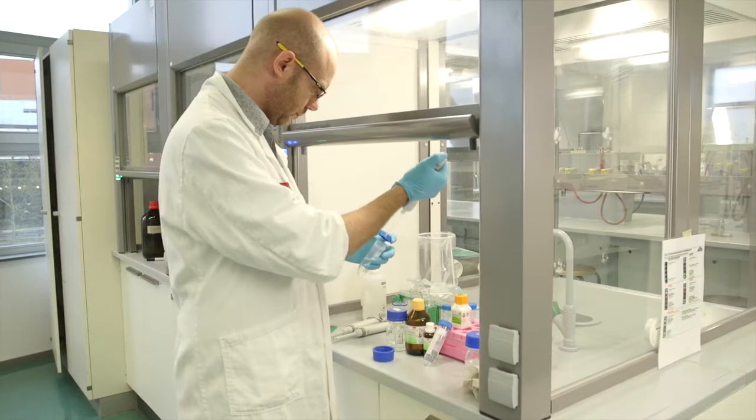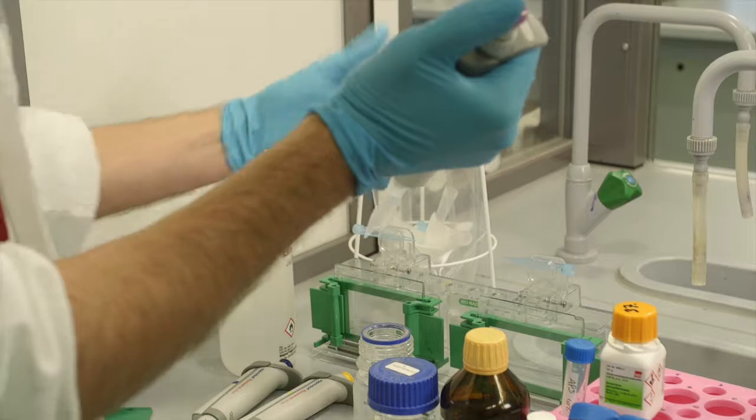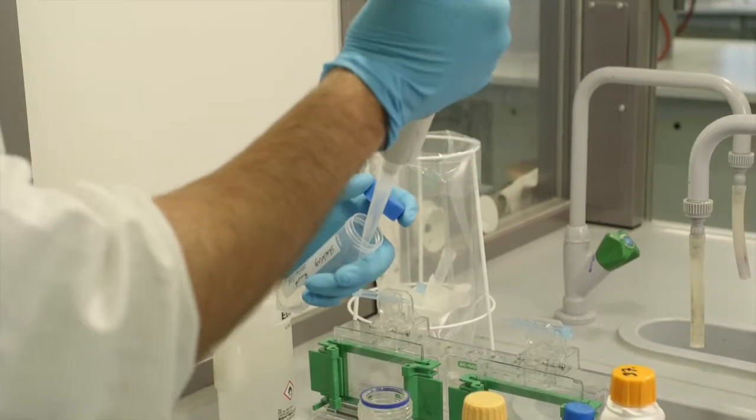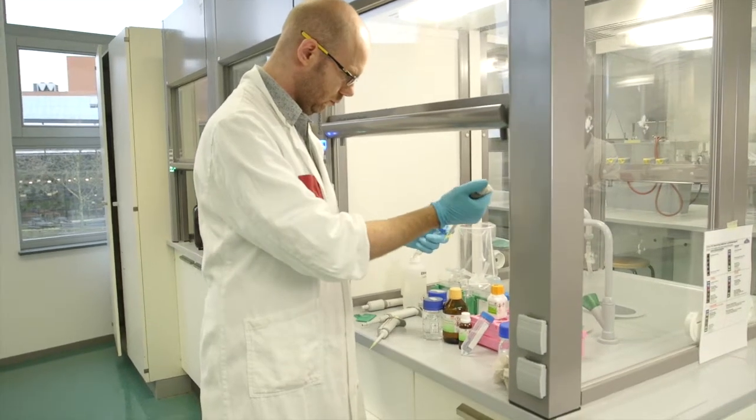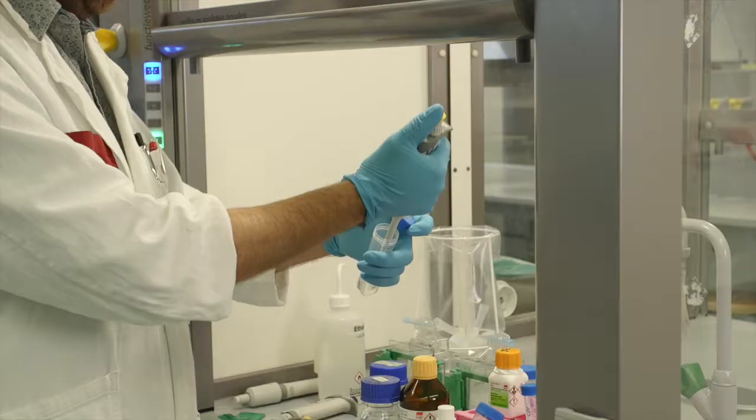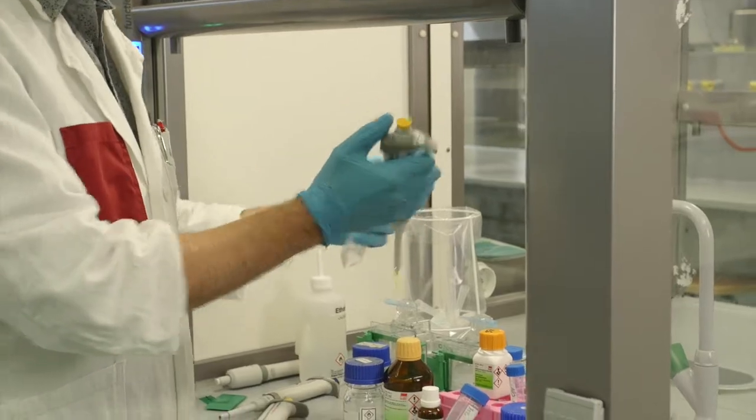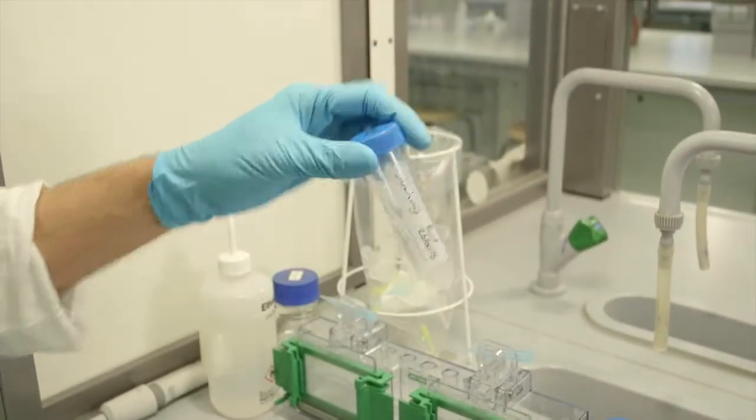Prepare the running gel in a fume hood. Calculate the volumes that are required for making the gel. Pipette the required volumes into a tube. Add the Temed and the APS last, as this will cause the solution to polymerize. Shake the solution by turning upside down two times.